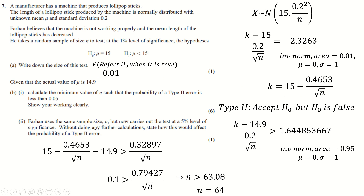Using a 5% significance level instead of 1% (with the same sample size) would increase the size of the critical region, making it easier to reject H0. This decreases the probability of accepting H0, which in turn decreases the probability of a Type 2 error. Thank you for watching.